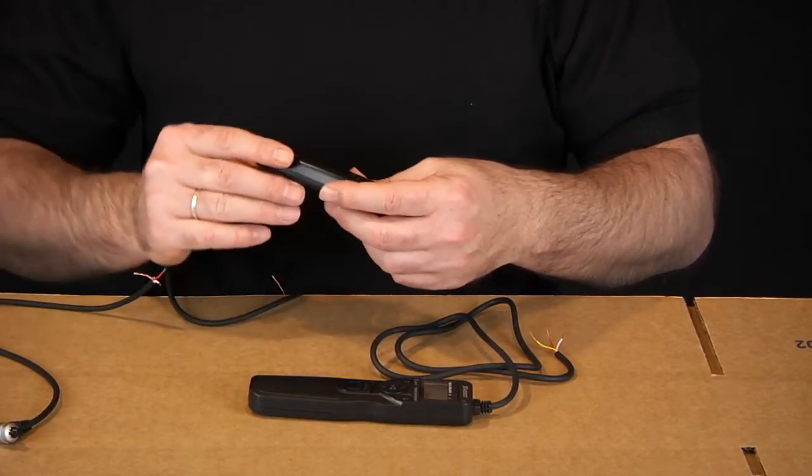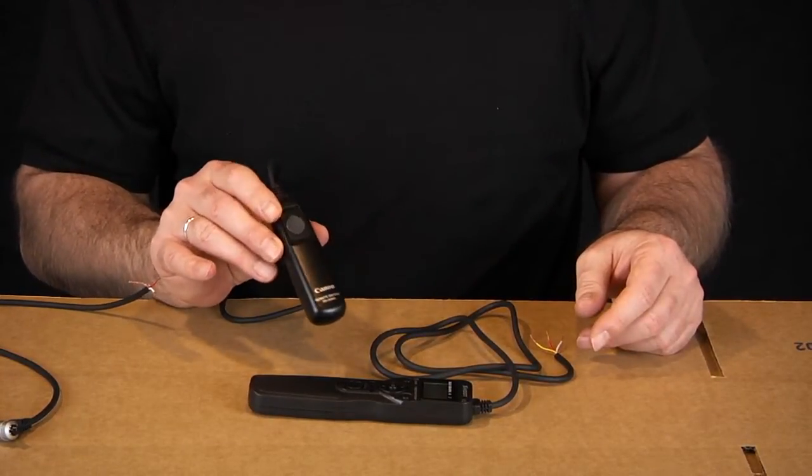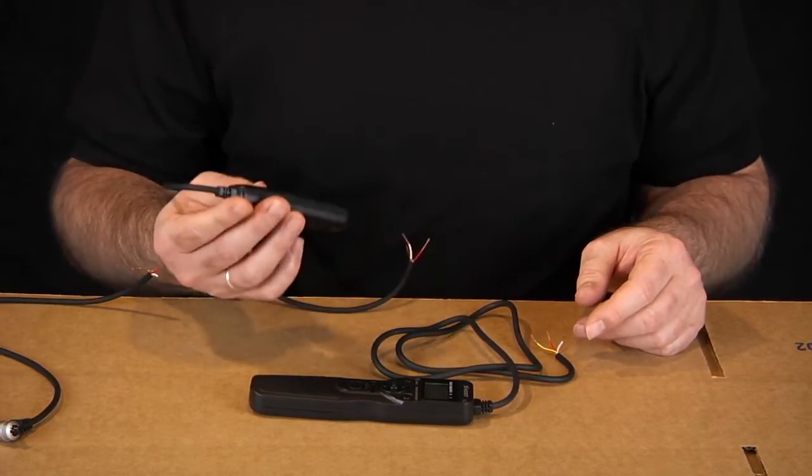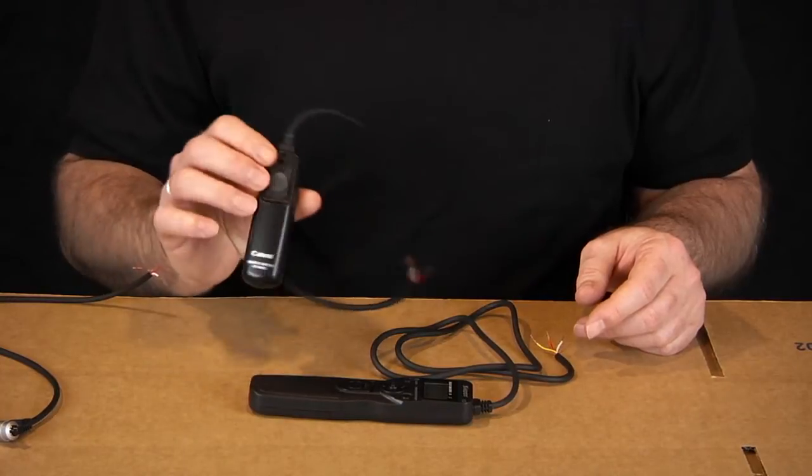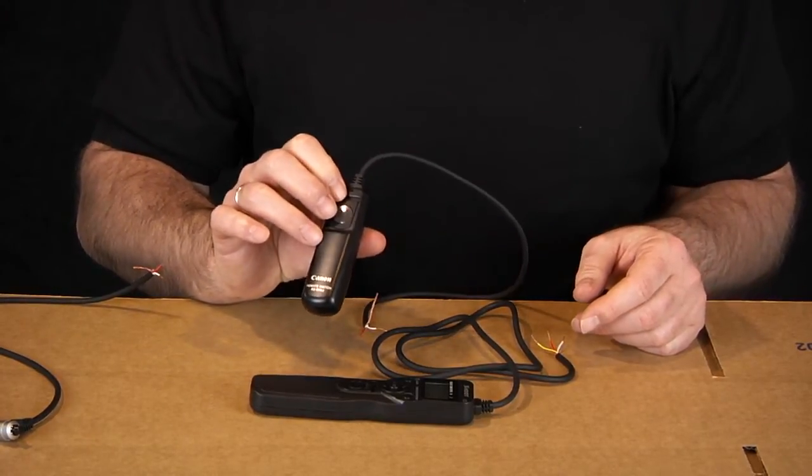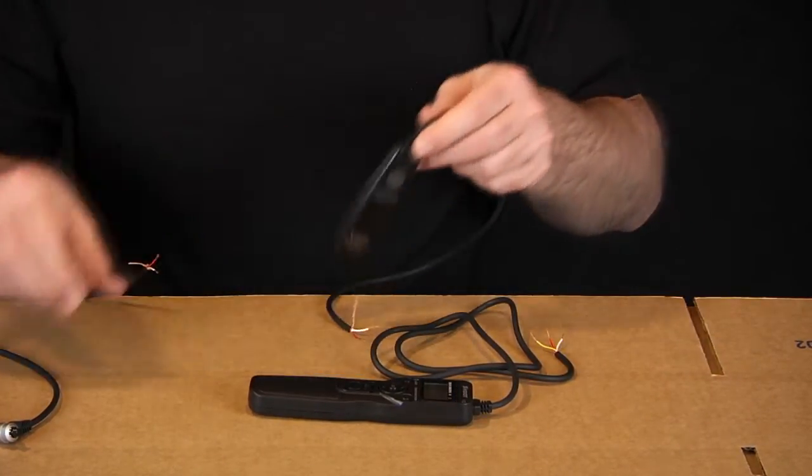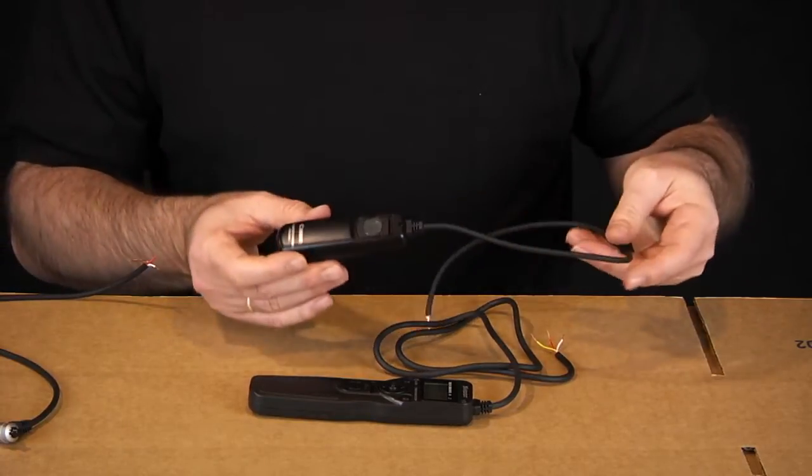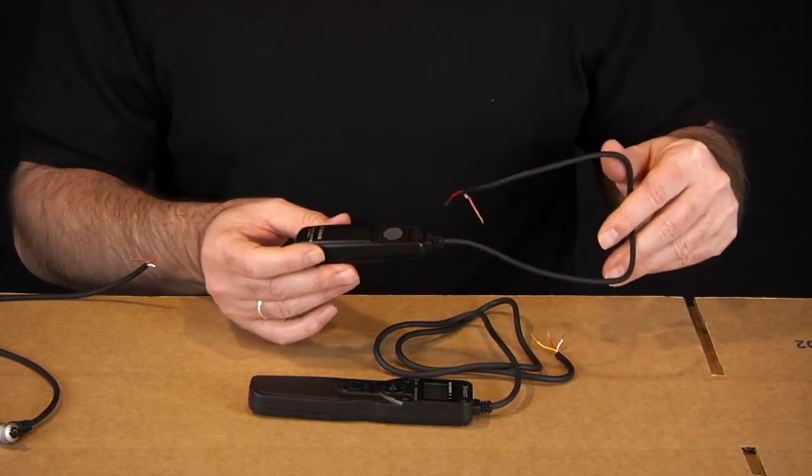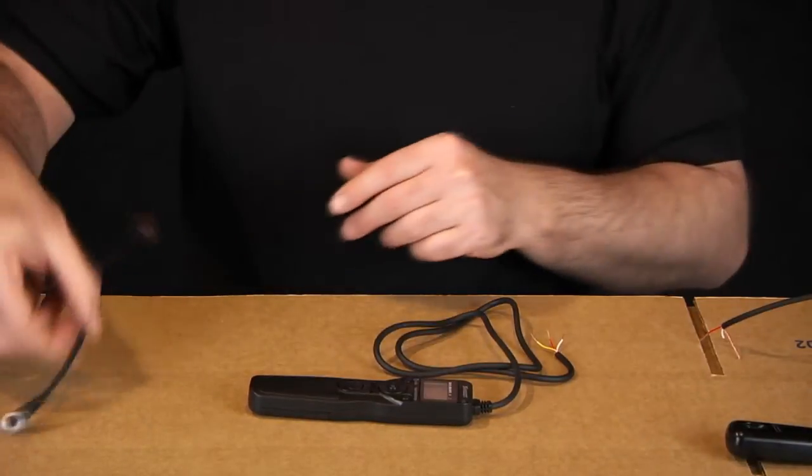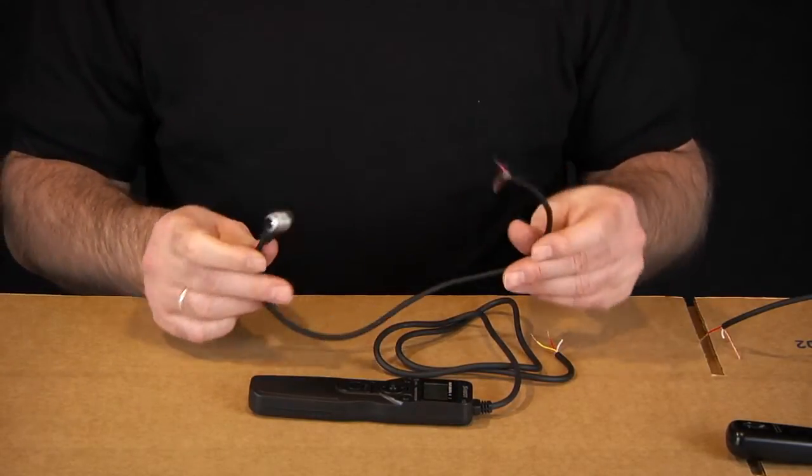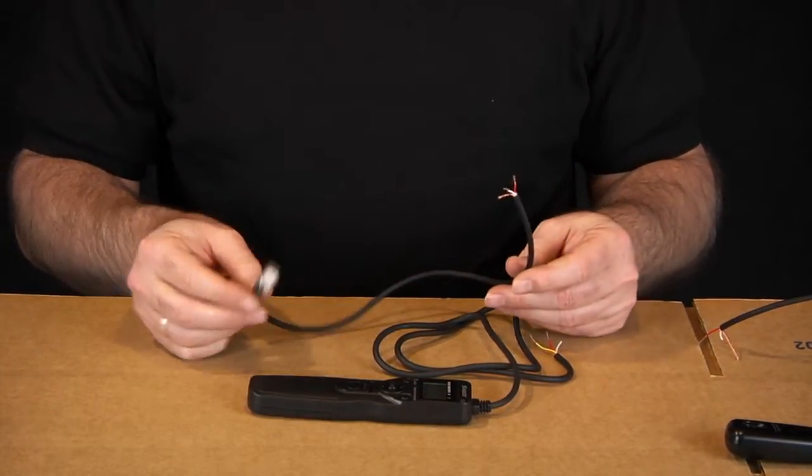I had bought a Canon remote switch and this is the RS80N. I know that this particular remote works both with the 7D and the 20D. I went ahead and cut the end off and I'm going to show you how to make this cheap timer compatible with all Canon cameras that take the RS80N.